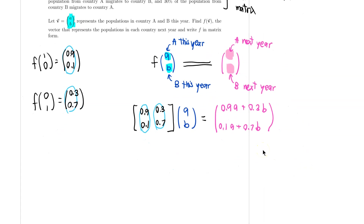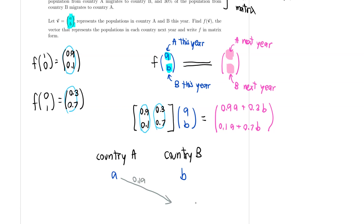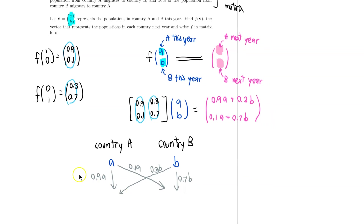To see why this makes sense, let's think of the general case. If I have little A and little B in countries A and B respectively, then because 10% of people from country A move to country B, 0.1A will move and 0.9A will remain in country A. Out of B people, 30% move to country A, so 0.3B moves to A and 0.7B remains in country B. So next year I have 0.9A plus 0.3B in country A, and 0.1A plus 0.7B in country B. Notice this is the same as what we saw earlier.